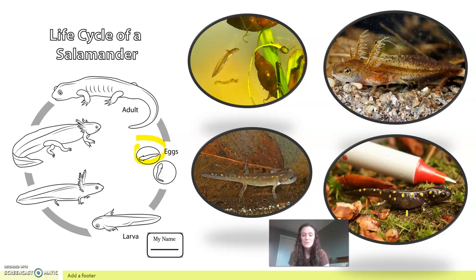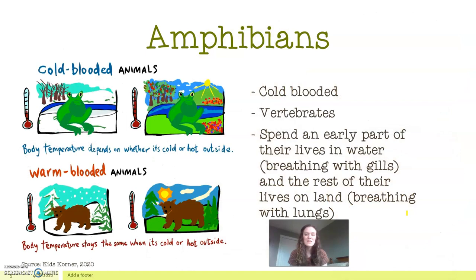Just a quick review: amphibians are cold-blooded vertebrates, which means they have a backbone. They spend the first part of their lives underwater breathing with gills — those feather-like gills we talked about — then the rest of their lives on land breathing with lungs. Cold-blooded means they depend on whether it's hot or cold outside; they are dependent on their environment to keep them warm.